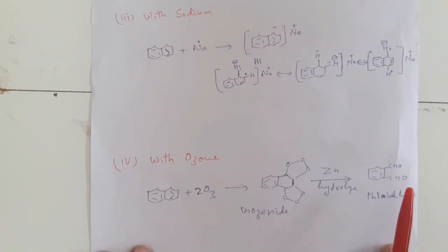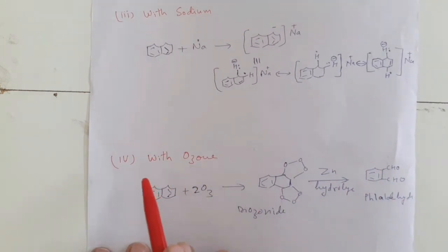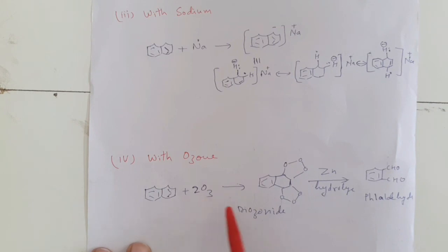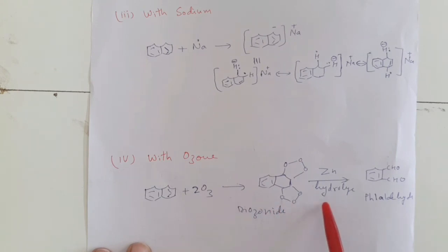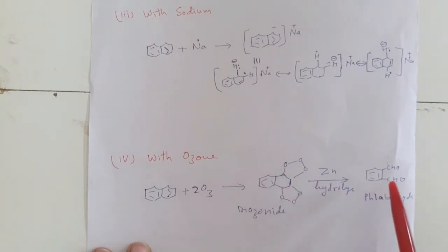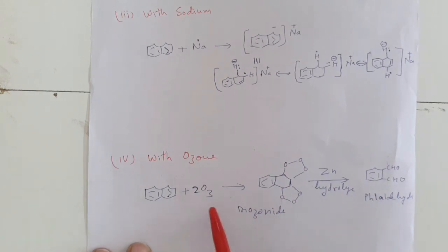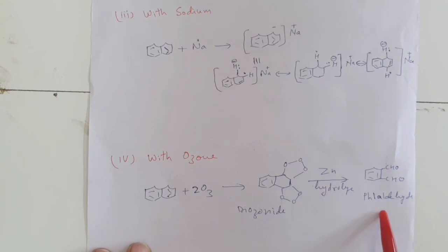Another addition reaction is the addition of naphthalene with ozone. Naphthalene reacts with two molecules of ozone to give an addition compound, diozonide. The two molecules are attached on the two double bonds of naphthalene. This diozonide, when hydrolyzed with water in the presence of zinc, the ring is oxidized and we get phthalaldehyde. So with ozone, through diozonide and hydrolysis, we get phthalaldehyde. These are the addition reactions of naphthalene.